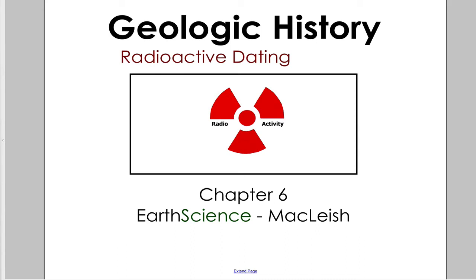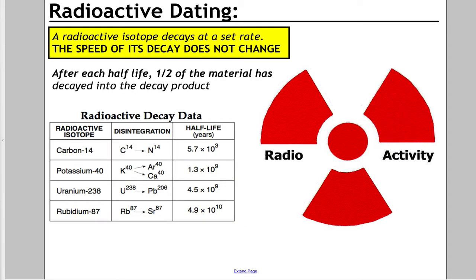This video will review radioactive dating as part of Chapter 6 in Earth Science. Radioactive dating is a process that scientists use to determine the exact or absolute age of a material.